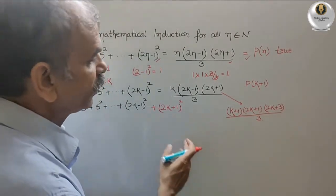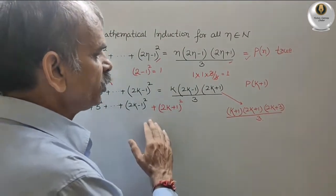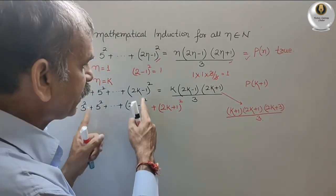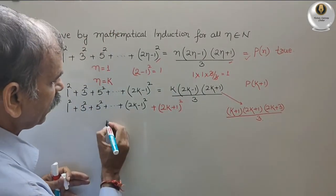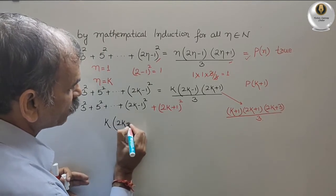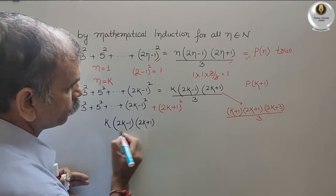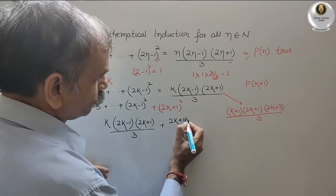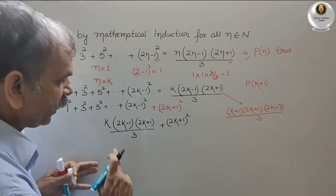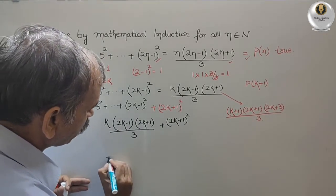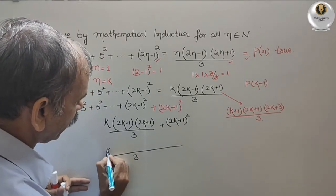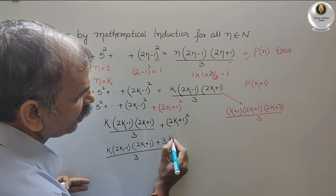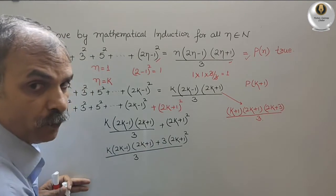To prove LHS equals RHS, the black part of the LHS is nothing but the P(k) expression, which equals k(2k−1)(2k+1)/3. We write k(2k−1)(2k+1)/3 plus the red term (2k+1)². Taking LCM of 3, we get [k(2k−1)(2k+1) + 3(2k+1)²] / 3.